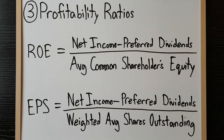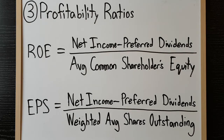Profitability ratios, as the name implies, assess a company's ability to earn a profit and measure financial performance for a specific period of time. Return on equity is a commonly used ratio that measures the profitability of the owner's investment. Return on equity is calculated as net income, less preferred dividends, over average common shareholders' equity.